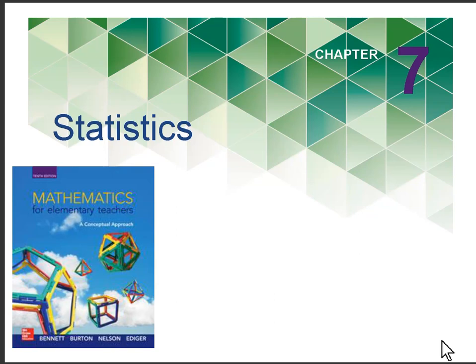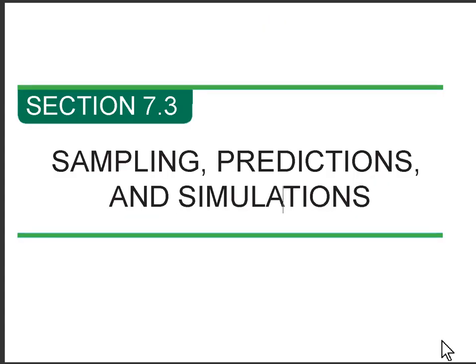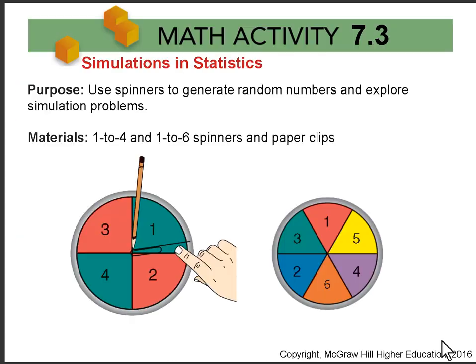This video is for Chapter 7, Section 7.3, Simulations and Statistics. We'll use spinners — a 1 to 4 and a 1 to 6 — to generate random numbers and do some simulation processes.